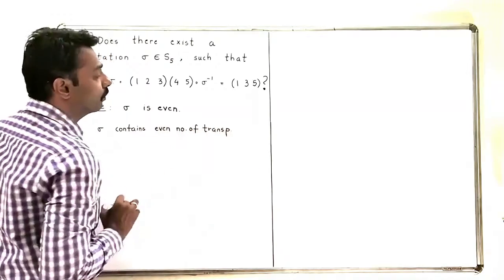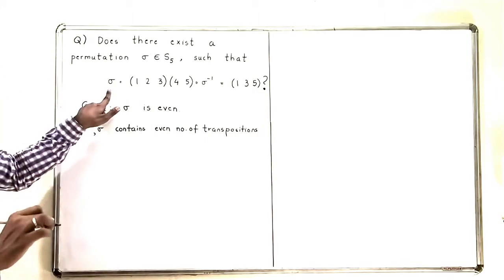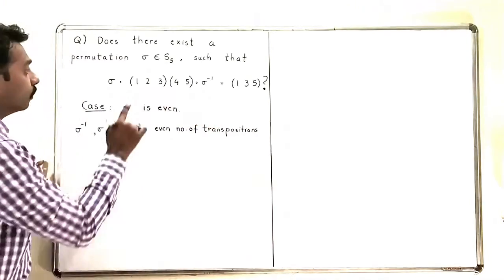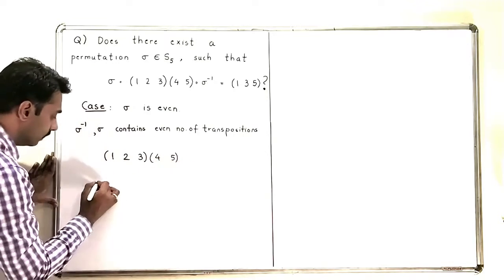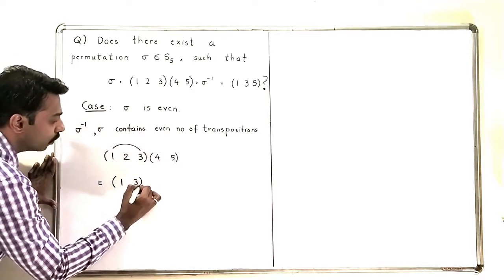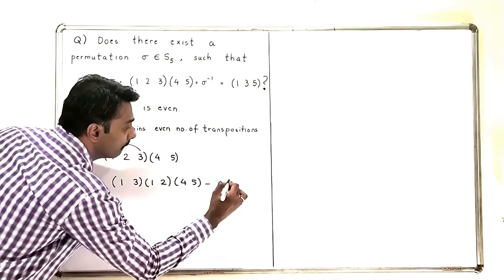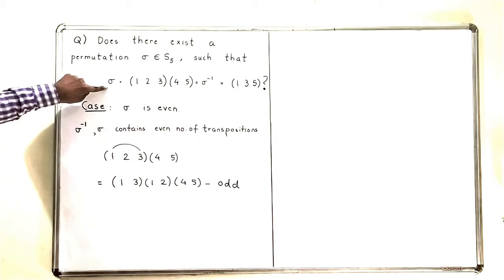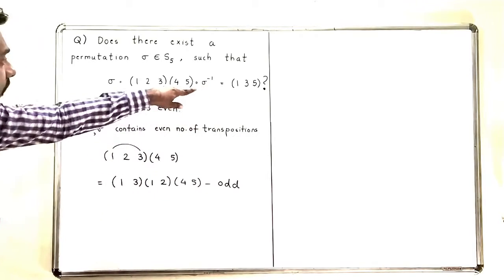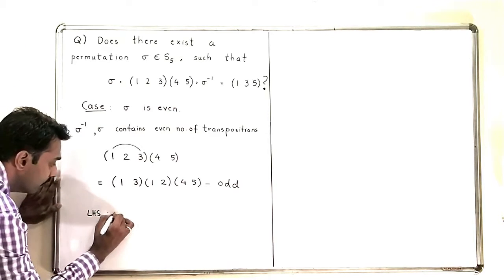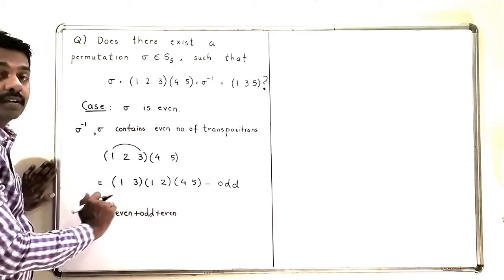If σ is even, it contains an even number of transpositions, and therefore σ⁻¹ also contains an even number of transpositions. Now, the permutation (1 2 3 4 5) can be written as (1 3)(1 2)∘(4 5), which is an odd permutation. So on the left-hand side, we have even + odd + even number of transpositions, and even plus odd plus even equals odd.